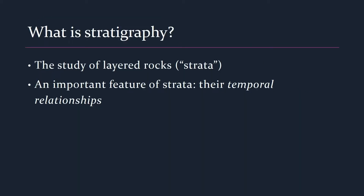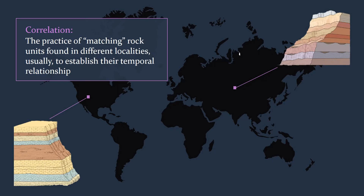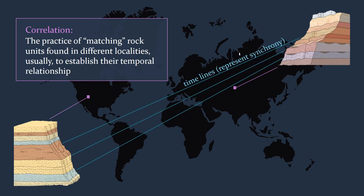Stratigraphy is the study of layered rocks, or strata, but on a more basic level it is all about time. Stratigraphers are interested in determining the ages of rocks and in using this information to delineate a sequence of geological units that can be recognized throughout a region and even throughout the world. This involves, first, delineating packages of strata representing discrete units of time, and second, fitting these packages together through a process called correlation — the practice of matching rock units found in different localities, to establish a correspondence between geographically separated parts of a single geological unit, building a timescale applicable over a maximally wide geographical area.